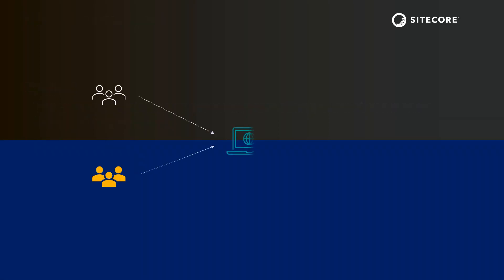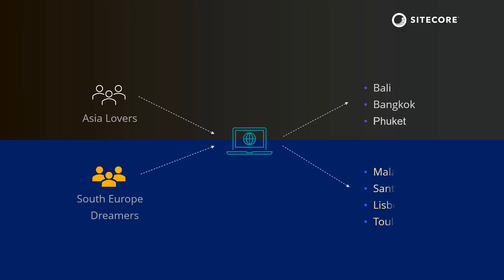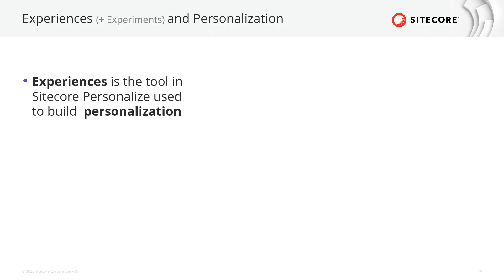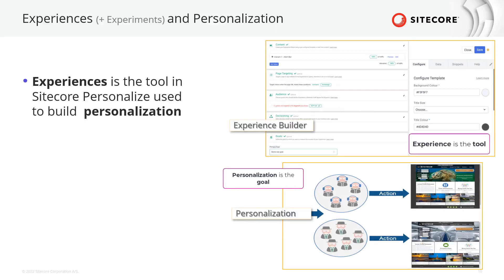For example, if we are running a travel agency website and we know that some guests are interested in traveling to South Europe, every time those users visit our website they should be served with content that matches their needs. Getting back to Sitecore CDP and Personalize, experiences is the tool we use to build personalization.